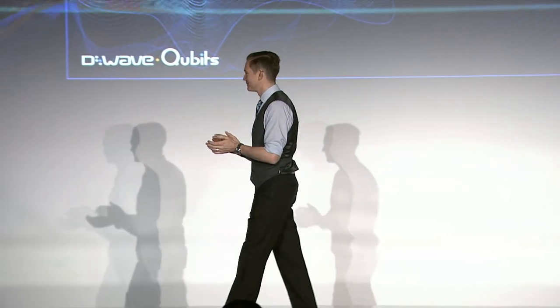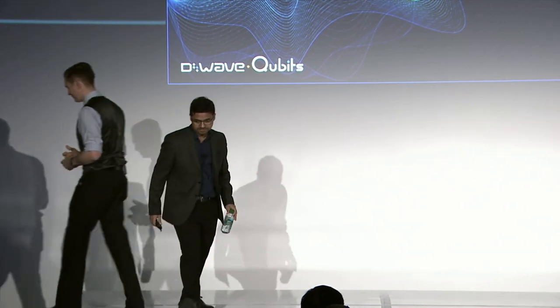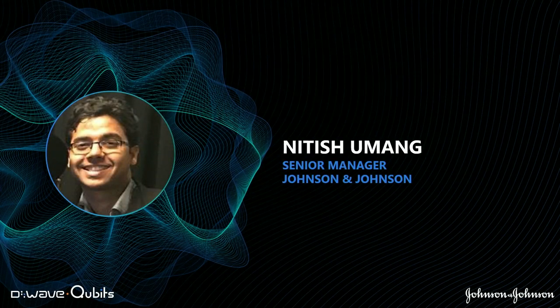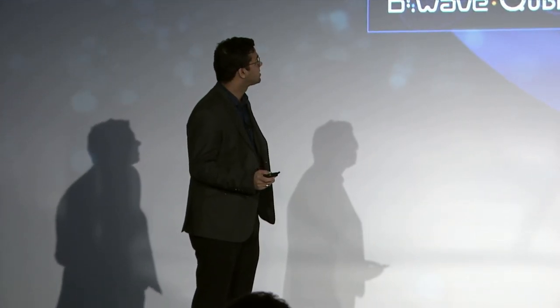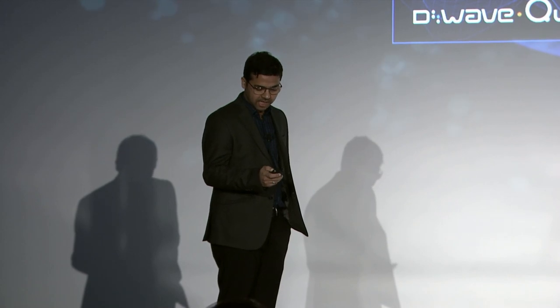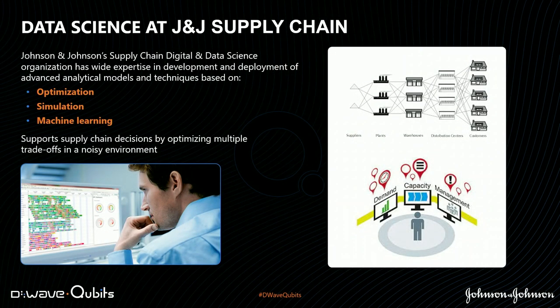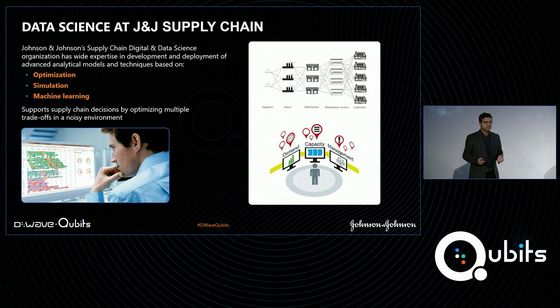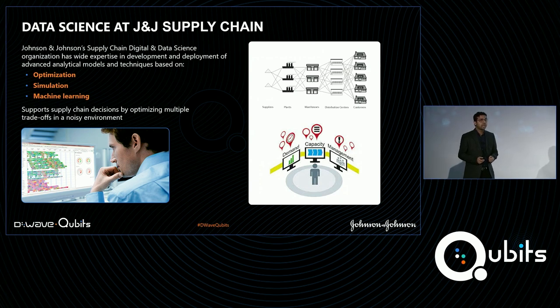We are now going to invite to the stage Nitish Umang. Good morning, everyone. My name is Nitish Umang. I'm a senior manager in the digital and data science organization at Johnson & Johnson. We are a team of engineers and data scientists with expertise in the development and deployment of advanced analytical models based on OR optimization, simulation, and machine learning.